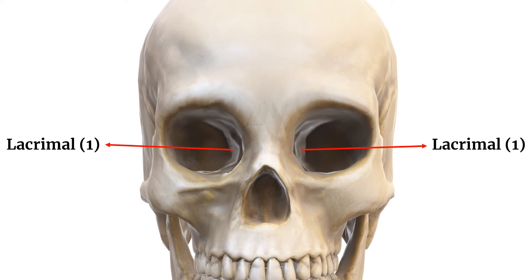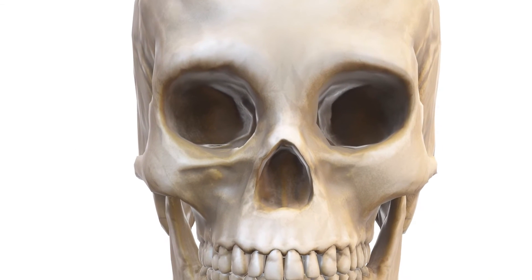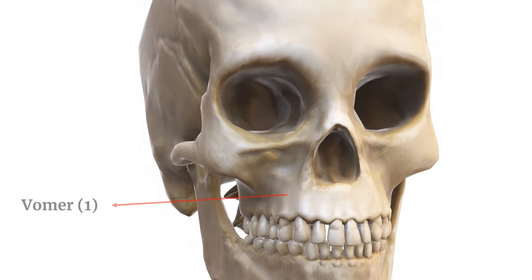Lacrimal bones: tiny bones at the inner corners of the eyes that help form the tear ducts. Vomer: this single bone forms part of the nasal septum, dividing the nasal cavity into two.